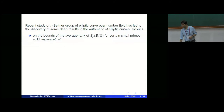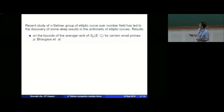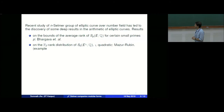There is also a series of very deep and influential papers by Mazur and Rubin on the study of the n-Selmer group — very many, very fundamental results. They take the 2-Selmer group, fix an elliptic curve, and take quadratic twists of the elliptic curve.